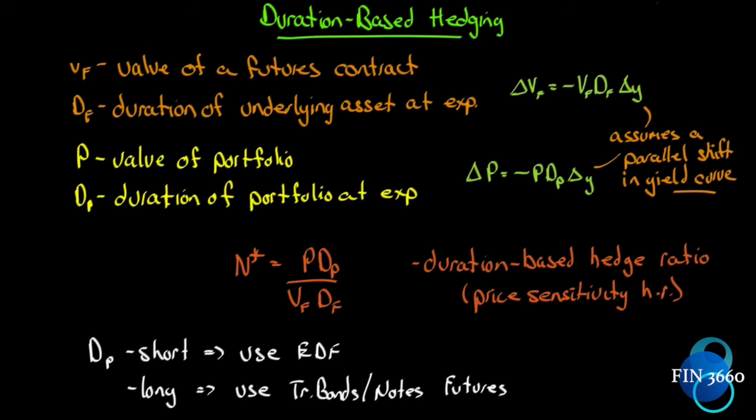It's really just as simple as going back to the original hedge ratio we did back in chapter 3 when we looked at using futures to hedge. We calculated the optimal hedge ratio and then just multiply it by a duration ratio.